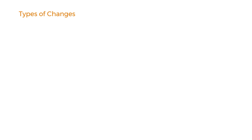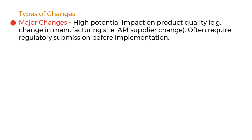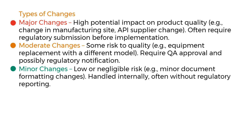Not all changes are equal — classify them by risk level. Major changes have high potential impact on product quality; examples include a change in manufacturing site or API supplier change, and often require regulatory submission before implementation. Moderate changes carry some risk to quality — for example, equipment replacement with a different model — and require QA approval and possibly regulatory notification. Minor changes have low or negligible risk, such as minor document formatting changes, and are handled internally, often without regulatory reporting.